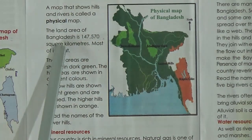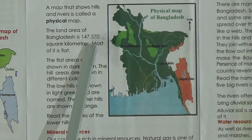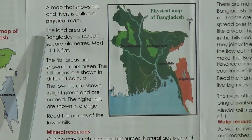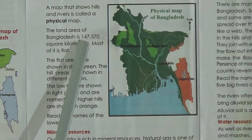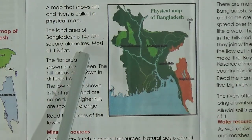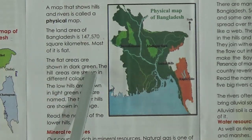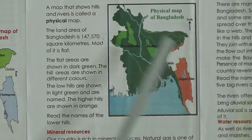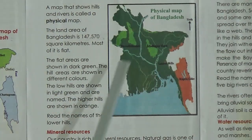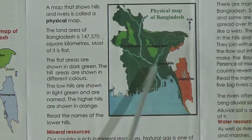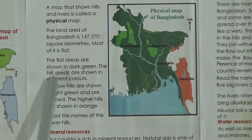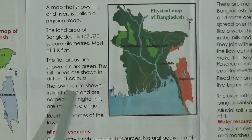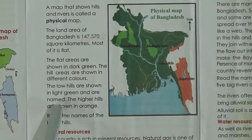The land area of Bangladesh is 147,570 square kilometers. Most of it is flat. The flat areas are shown in dark green on the map. The hill areas are shown in different colors — the low hills are shown in light green.